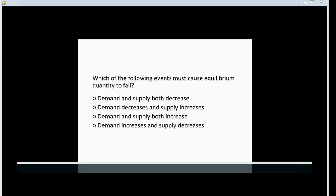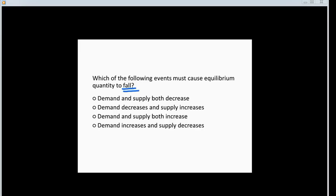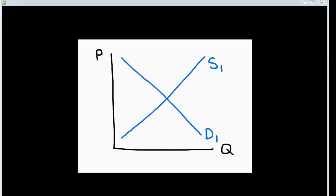Let's see what one of these brief remediation videos might look like. This question asks you to determine which of the following events must cause equilibrium quantity to fall. Let's start by analyzing what kind of shift in demand causes the equilibrium quantity to decrease. The following graph represents a standard supply and demand graph for a given good. If demand increases, this means that the demand curve shifts to the right, causing an upward movement along the supply curve and an increase in the equilibrium quantity.